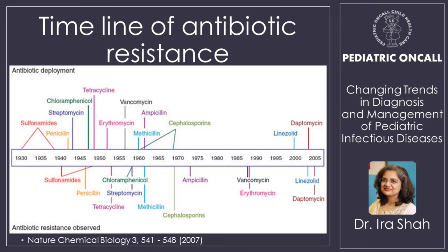Looking at the timeline of antibiotic resistance — the top ones are when drugs were introduced, the bottom ones when they became resistant. Look at the last one, daptomycin, introduced somewhere around 2000 to 2005, and it's already resistant. So we are talking about a time gap of three to four years and we are getting resistance. A lot of infectious disease problems — we are actually creating ourselves.